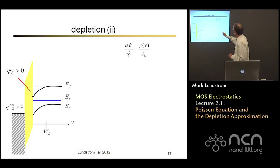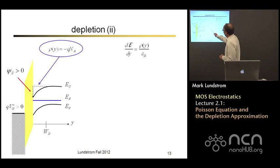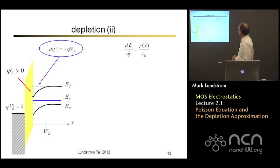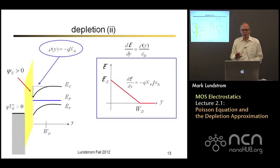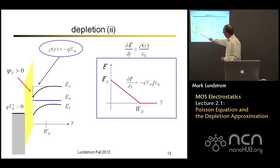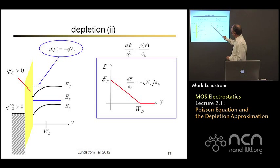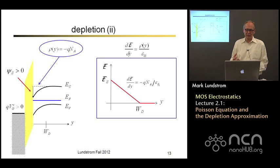Let's solve the depletion problem using the Poisson equation. We can estimate the charge density in the region near the surface over which we've pushed all the holes away and exposed the negatively charged acceptors. The charge density is minus Q times the doping density, if the acceptors are fully ionized at room temperature, divided by the dielectric constant. So the slope of the electric field is negative in this region near the surface. The band bending only extends to depth WD, so the slope has to go to zero at WD. We have a constant negative slope that we can extrapolate to the surface, and at the surface we'll have a positive electric field E sub S.